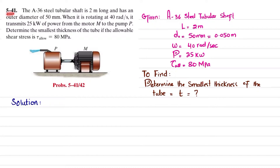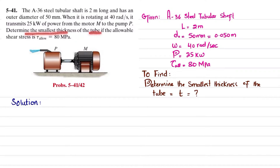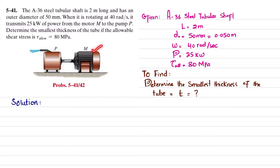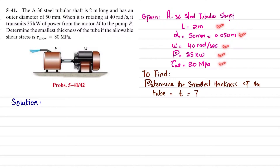Welcome back, problem 5-41. The statement is: the A36 steel tubular shaft is 2 meters long and has an outer diameter of 50 millimeters. When it is rotating at 40 radians per second, it transmits 25 kilowatt power from motor M to pump P. This is the motor M transmitting power to the pump using this tubular shaft with outer diameter 50 millimeters and length 2 meters, made of A36 steel, rotating at 40 radians per second.